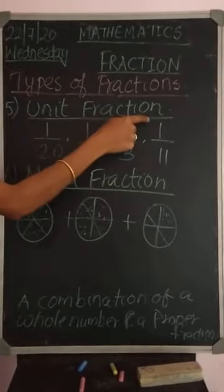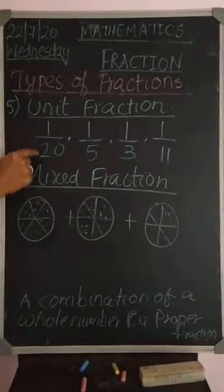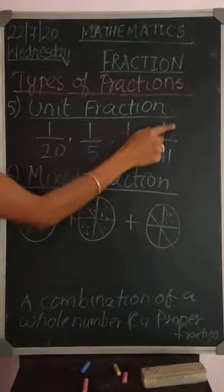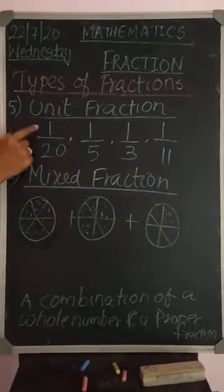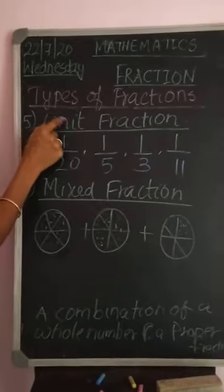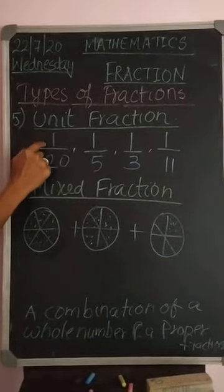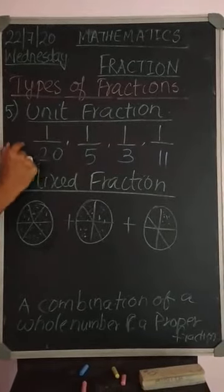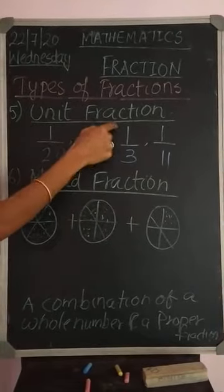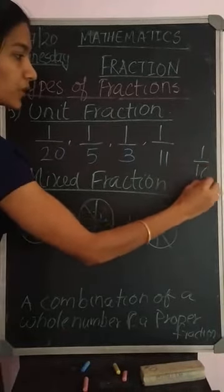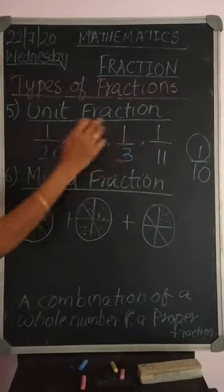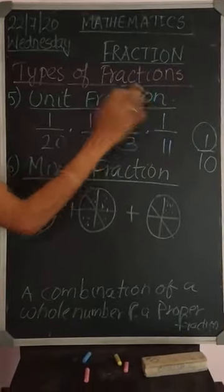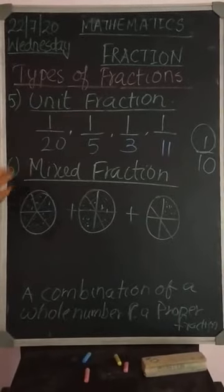Next, unit fraction. Can you observe these fractions: 1 by 20, 1 by 5, 1 by 3, and 1 by 11? What about the numerators? In all fractions, the numerator is 1. Unit means 1, right? Because all numerators are 1, this fraction is called a unit fraction. For example, 1 by 10 — it is a unit fraction because the numerator is 1.